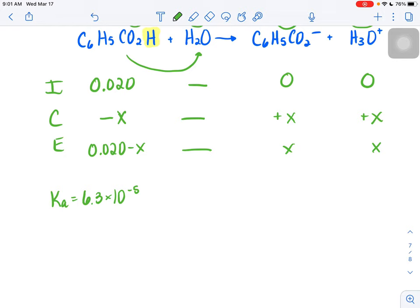You get to ignore this x if you take your Ka value and multiply it by 100, is it still smaller than your original weak acid concentration? So is it still smaller than this guy originally?